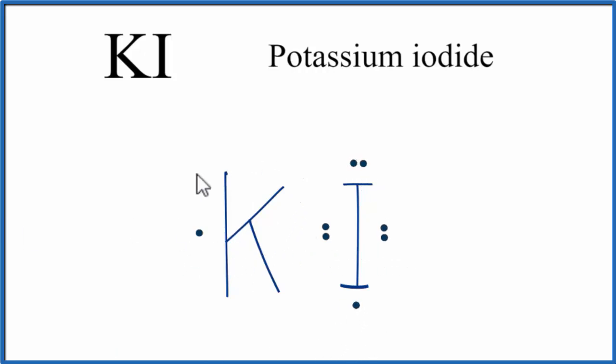In an ionic compound, the metal will transfer electrons to the nonmetal. The potassium has one valence electron and it transfers it to the iodine.